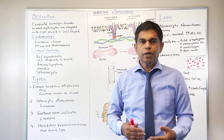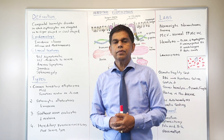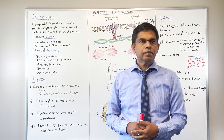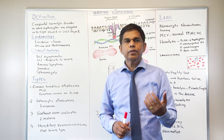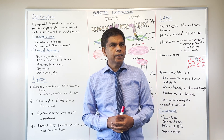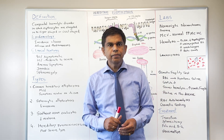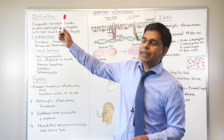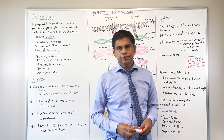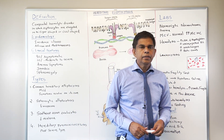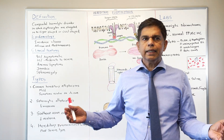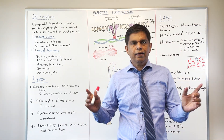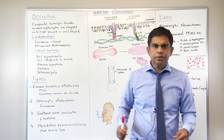So today we're going to — we did microcytic anemia, and now we're going to look at hemolytic anemia. Today's topic: we're going to start with hereditary elliptocytosis. Let's look at our definition first.